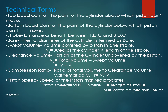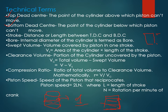Now the technical terms: TDC and BDC have already been covered. The stroke is the linear distance between TDC and BDC. The bore refers to the engine cylinder diameter, denoted as small d, generally in mm. Swept volume is the volume covered by the piston inside the engine cylinder, denoted as Vs.